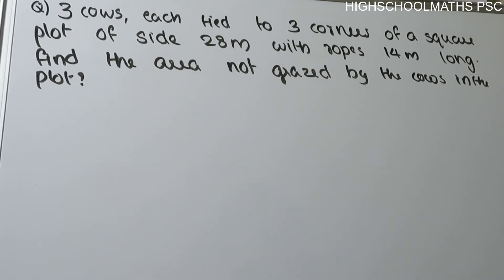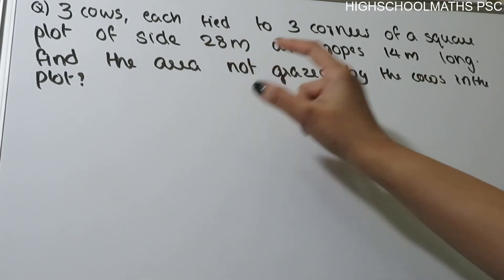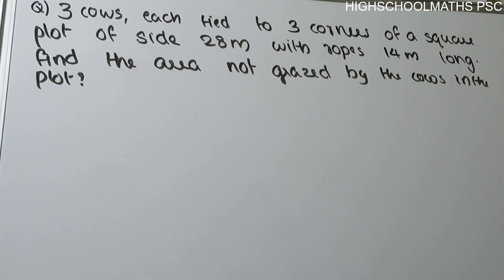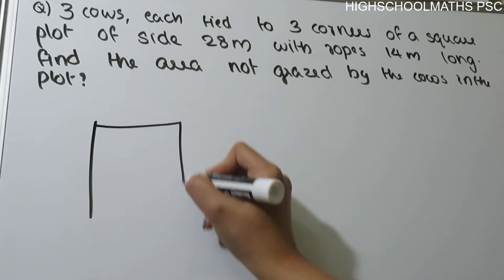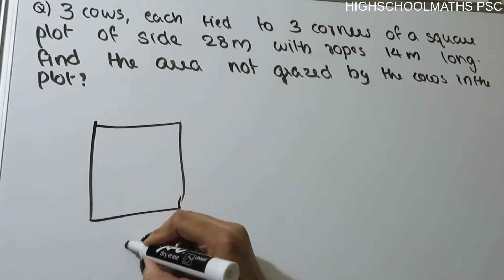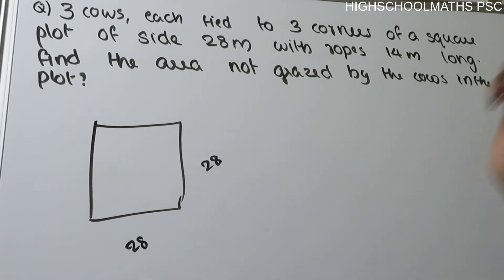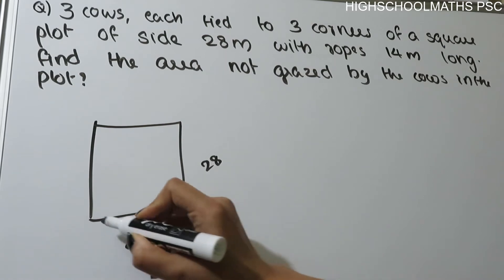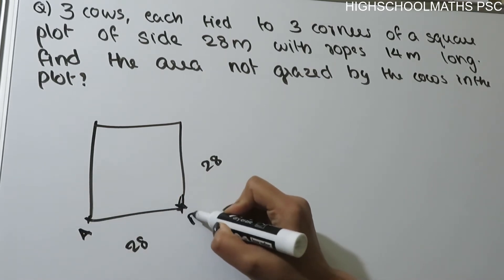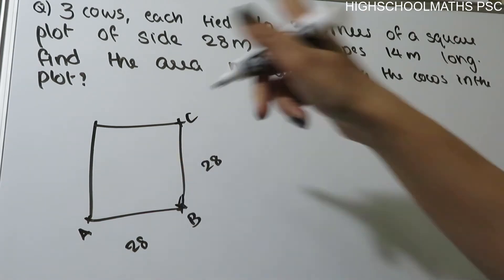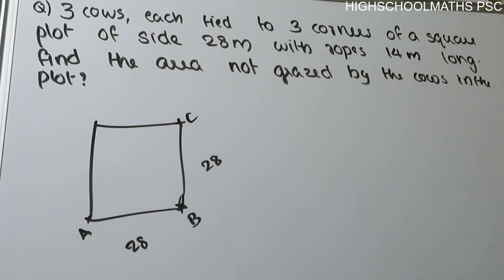Second question: Three cows each tied to three corners of a square plot of side 28 meters with ropes 14 meters long. Find the area not grazed by the cows in the plot. A square plot is 28 meters — all sides are 28 meters. Three corners A, B, C are given, with rope length 14 meters.